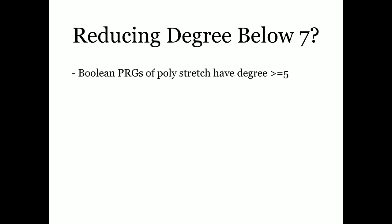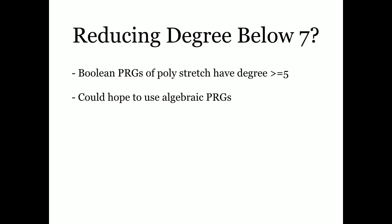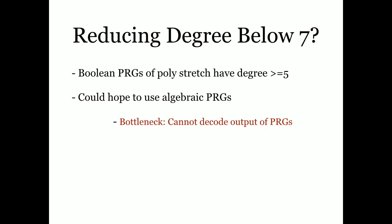The question is, can we reduce the degree below 7? It seems degree 5 is the minimum if you must use Boolean PRGs, since there are negative results showing you cannot achieve degree below 5 for Boolean PRGs. One could hope to use algebraic PRGs, but the main bottleneck is the problem of trying to decode the output of PRGs — this is not possible when using algebraic PRGs over large fields. Thank you.